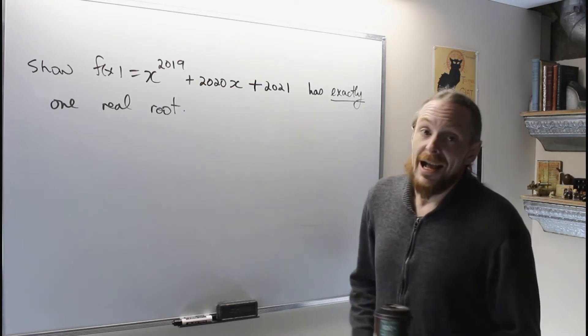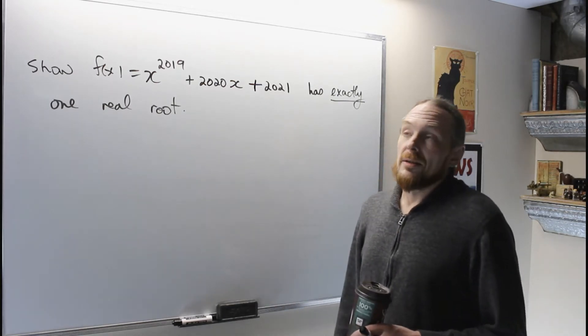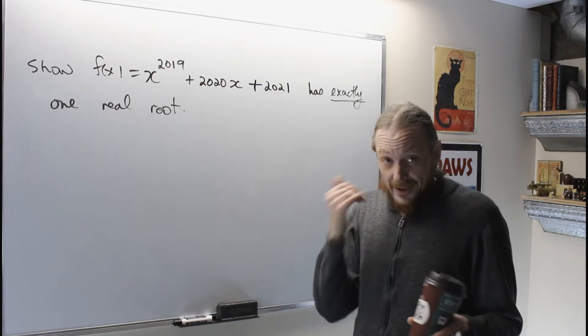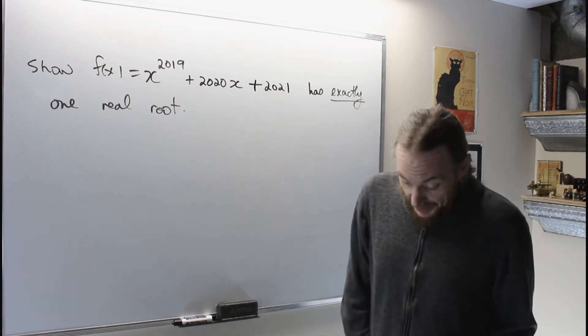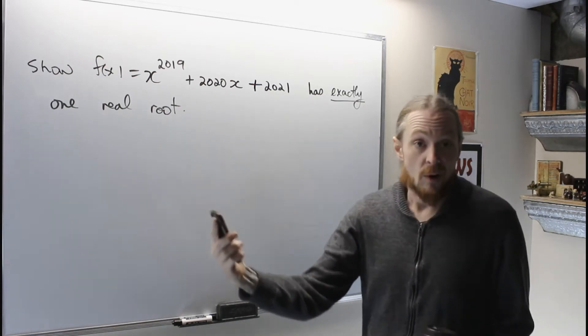So before I start, I have exactly one real phone in my pocket. What do I have to do to convince you of this statement? I have to use the Intermediate Value Theorem and produce a root. So there's the phone, the phone exists.